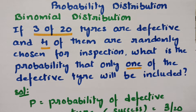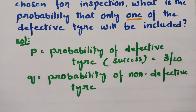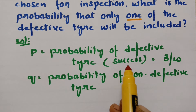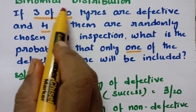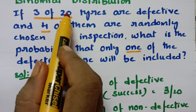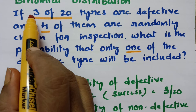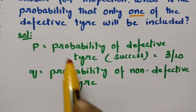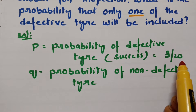Here P is the probability of success, which is the probability of a defective tire. Out of 20 tires, the defective tires are 3. Therefore, the probability of a defective tire is P = 3/20.